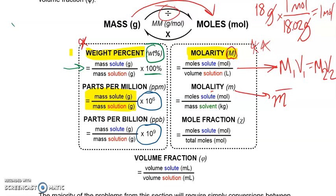Molality is used a lot when we talk about colligative properties, which is the last topic for this unit before the first exam. The reason it's a little different is because the denominator doesn't use the overall solution — it only uses the solvent. So if the overall solution is one kilogram but 100 grams comes from the solute, the mass of the solvent is 900 grams, and we'd put 900 in the denominator. This is where students typically get caught up, because they write the mass of the overall solution instead of just the solvent.